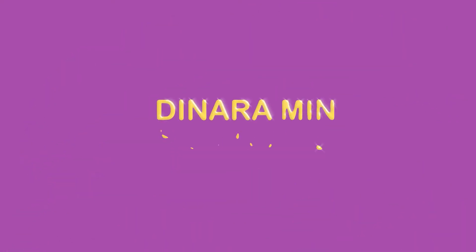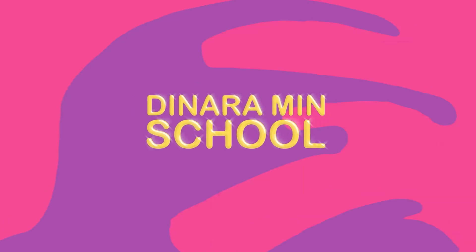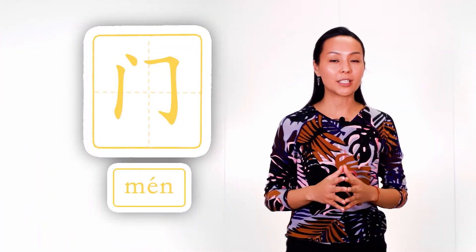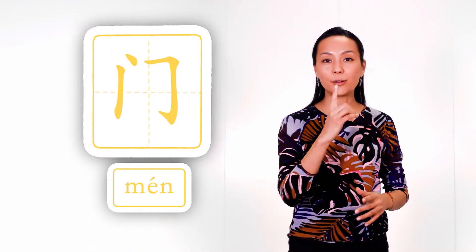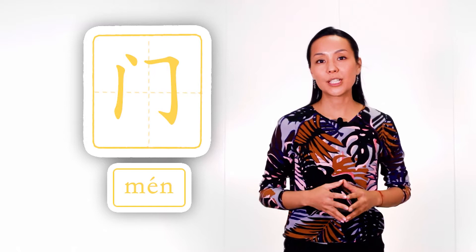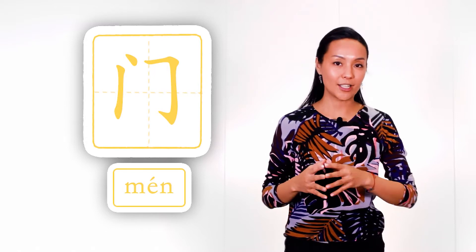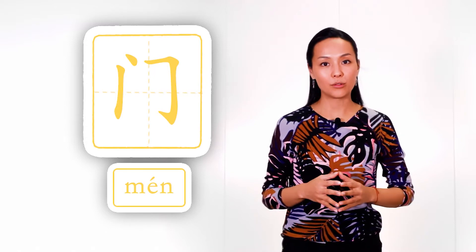Hi dear Chinese language lovers! In this class we're going to study radical gates — 门 (mén). This radical has only one form; it is used in characters and as a separate word.